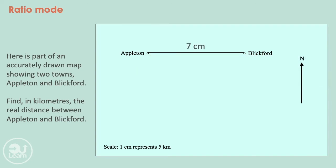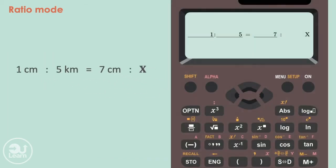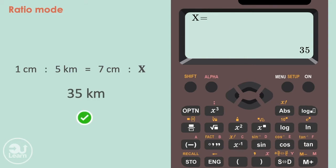Now we can represent our information as ratios. We can change the scale to a ratio which would be 1cm to 5km, which is equivalent to our 7cm to our unknown distance in kilometres. Placing this information into our calculator, we end up with a distance of 35km.